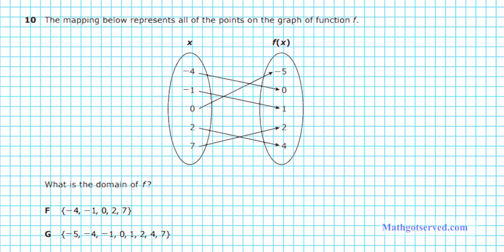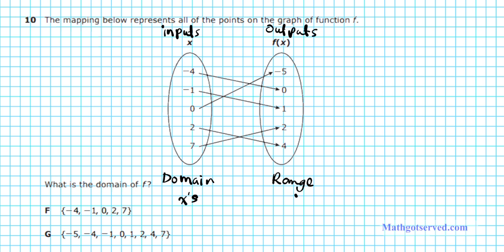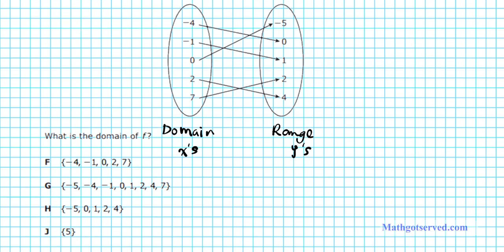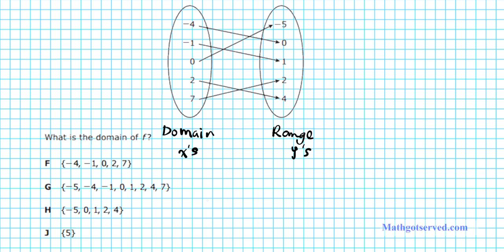Let's take a look at question 10. It says the mapping below represents all the points on the graph of the function F. What is the domain? Remember, in mapping notation, the X's are the inputs and those are the outputs. The set of inputs represents your domain — domain is the X's — and the outputs represent your range, the Y's. So we simply list all the inputs in set notation. The domain is: negative 4, negative 1, 0, 2, 7. Option letter F is the correct answer.